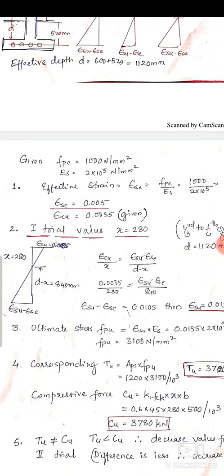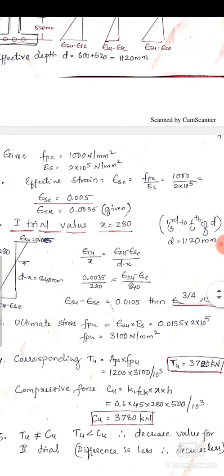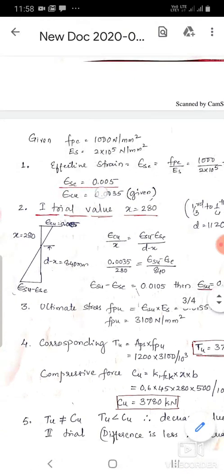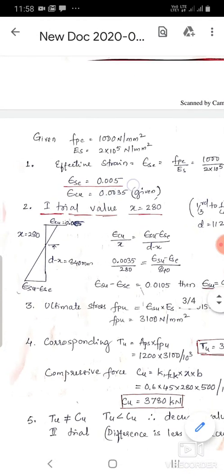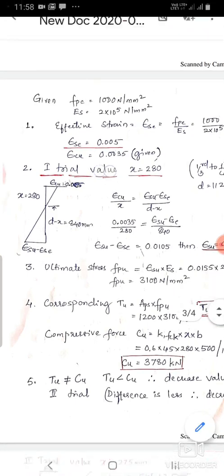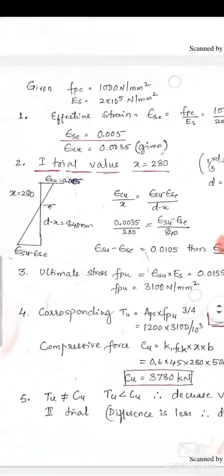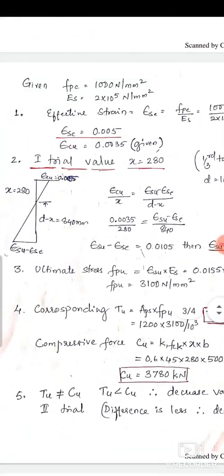The first step in the strain compatibility method is to calculate the effective pre-strain. ε_se = f_pe / E_s = 1000 / (2 × 10⁵) = 0.005. The ultimate compressive strain ε_cu = 0.0035, as given in the problem.